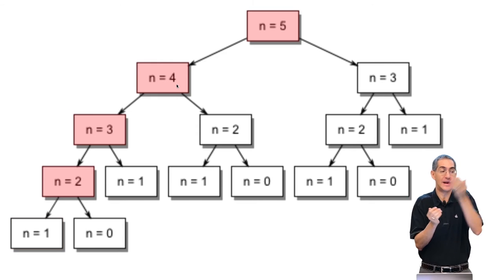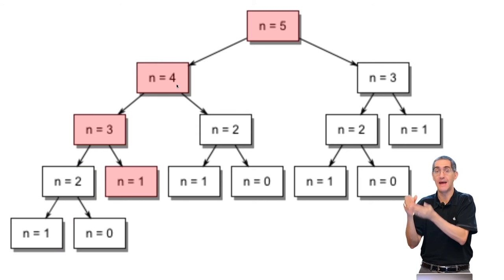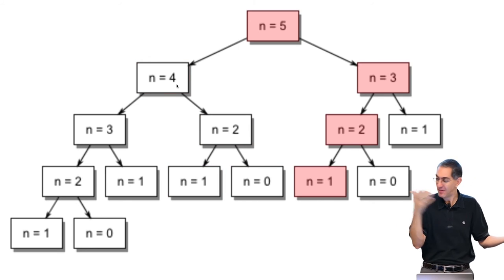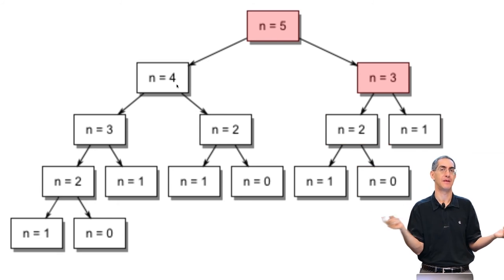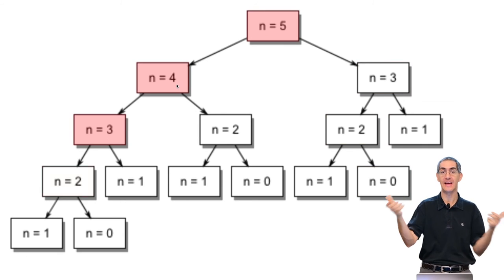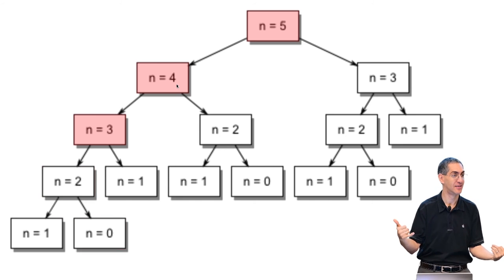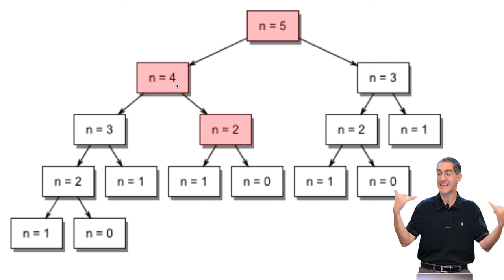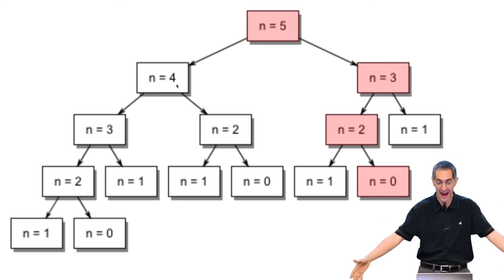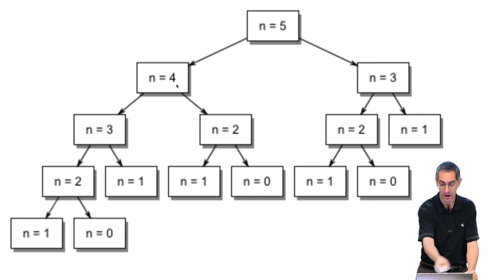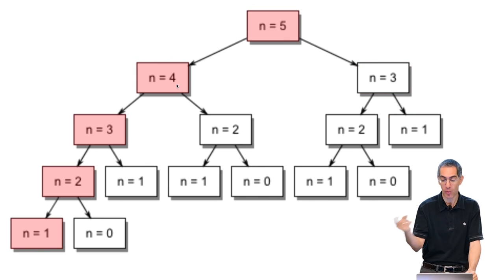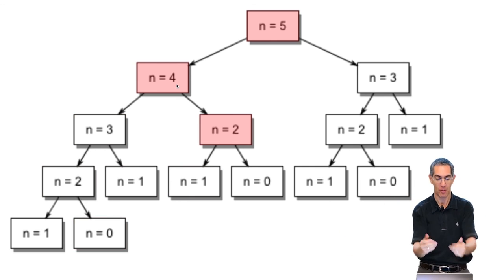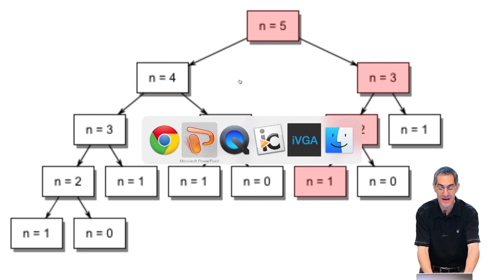Fibonacci of 100 is going to call 99, which takes a long time, and 98, which takes a long time. Now wait — what did 99 do? Called 98. But you had 98 over here already. It doesn't know that — in the base code, it doesn't know that. So it does two 98s, and four 97s, and eight 96s, and sixteen 95s. You see how it's growing? How many threes are there? Two threes. How many twos? Three twos. How many ones? Five ones. This grows really fast — it ends up growing really fast, close to a power of two.